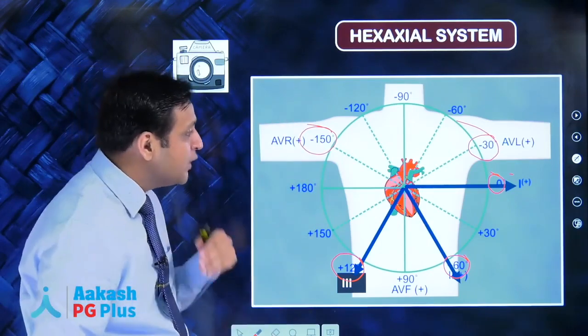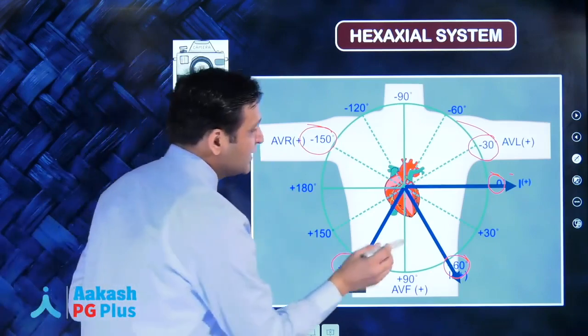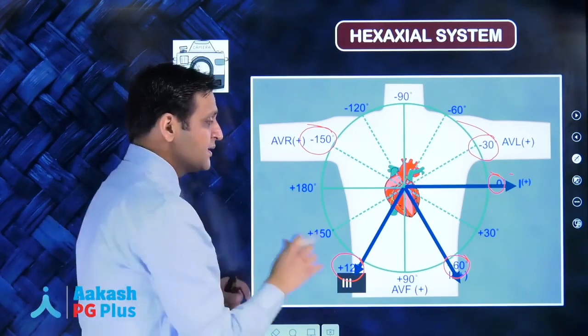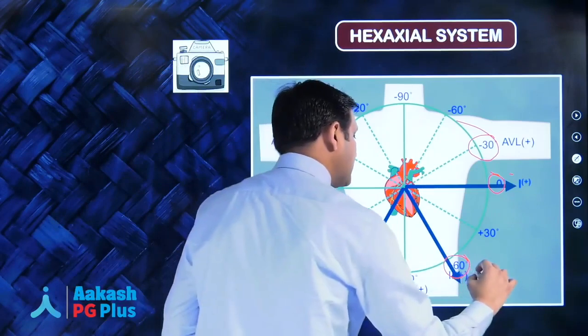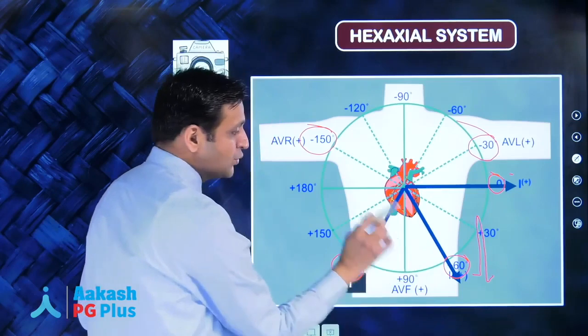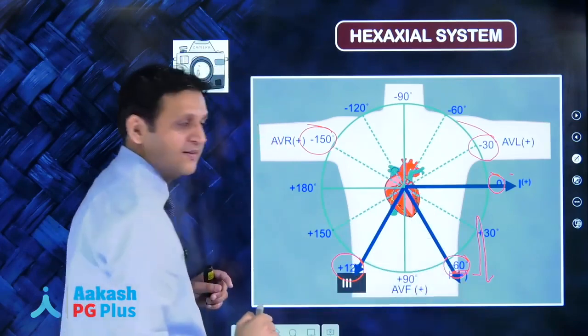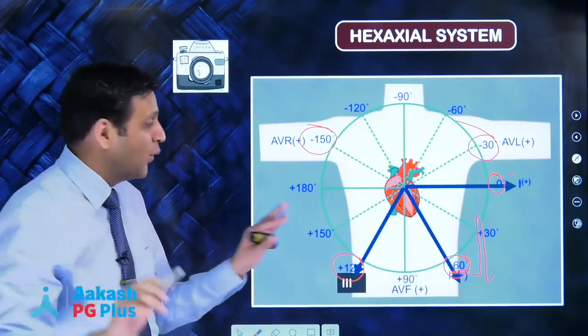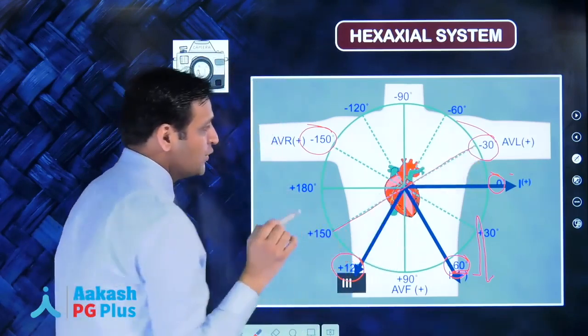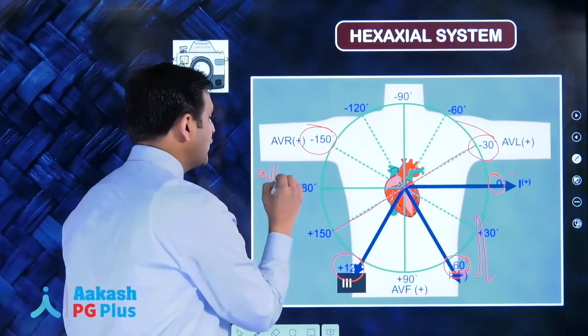If you have a wave of depolarization along a particular axis, it produces maximum positive deflection. So if your ECG is showing maximum positive deflection in lead two, it means the electrical wave of depolarization is along lead two and the axis is 60 degrees. Lead two is perpendicular to lead AVL, which means AVL will show you a biphasic QRS.